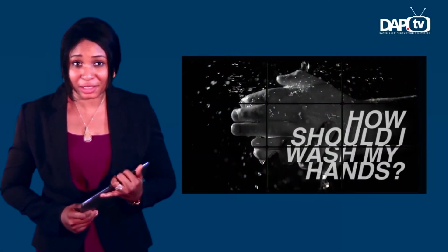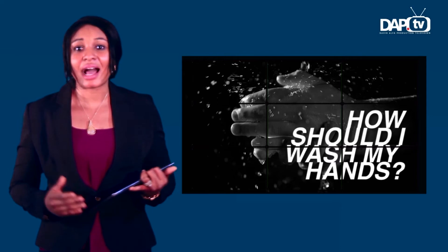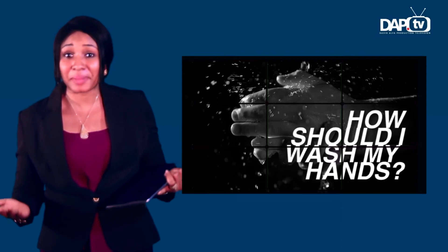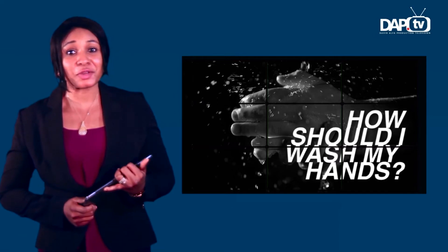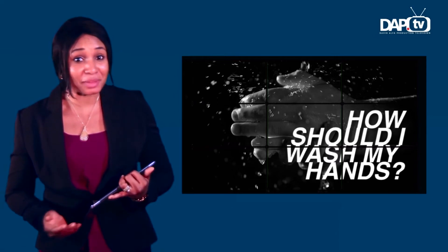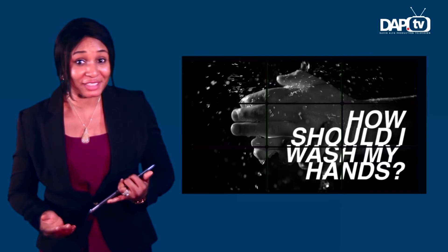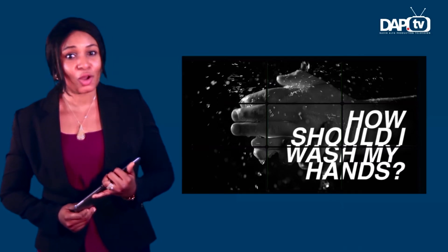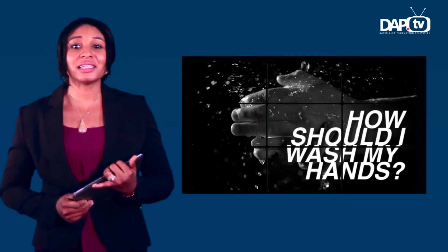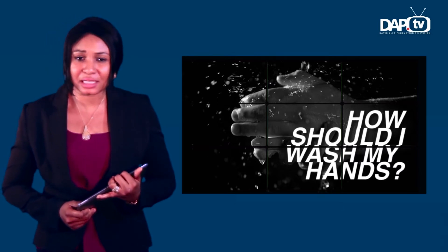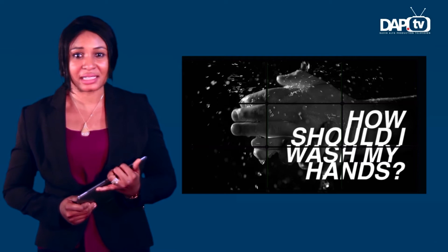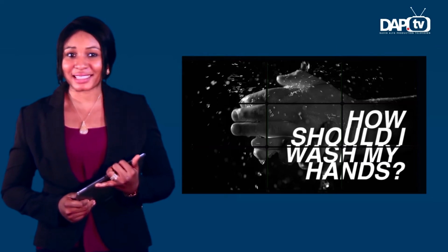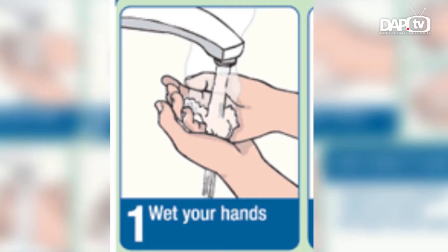That leads us to the next question: how should I wash my hands? Do you know that you may still have germs on your hands even after washing with soap and water? We must all learn the proper method for hand washing and it is quite simple. First, wet your hands with clean running water — warm or cold — and apply soap.